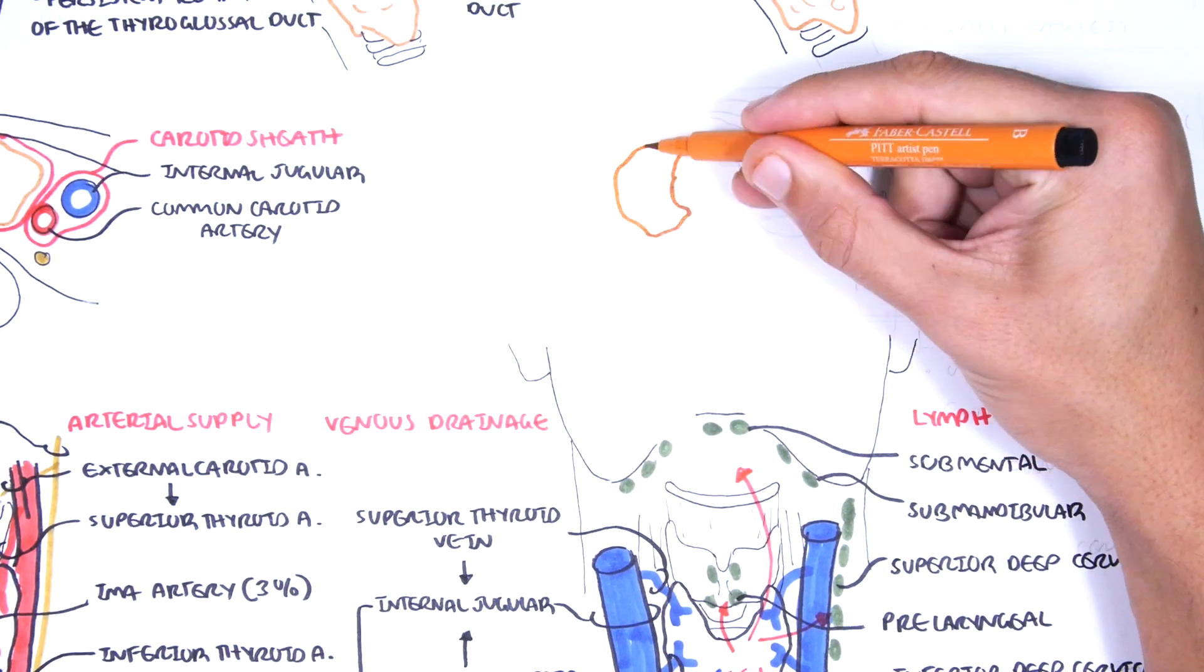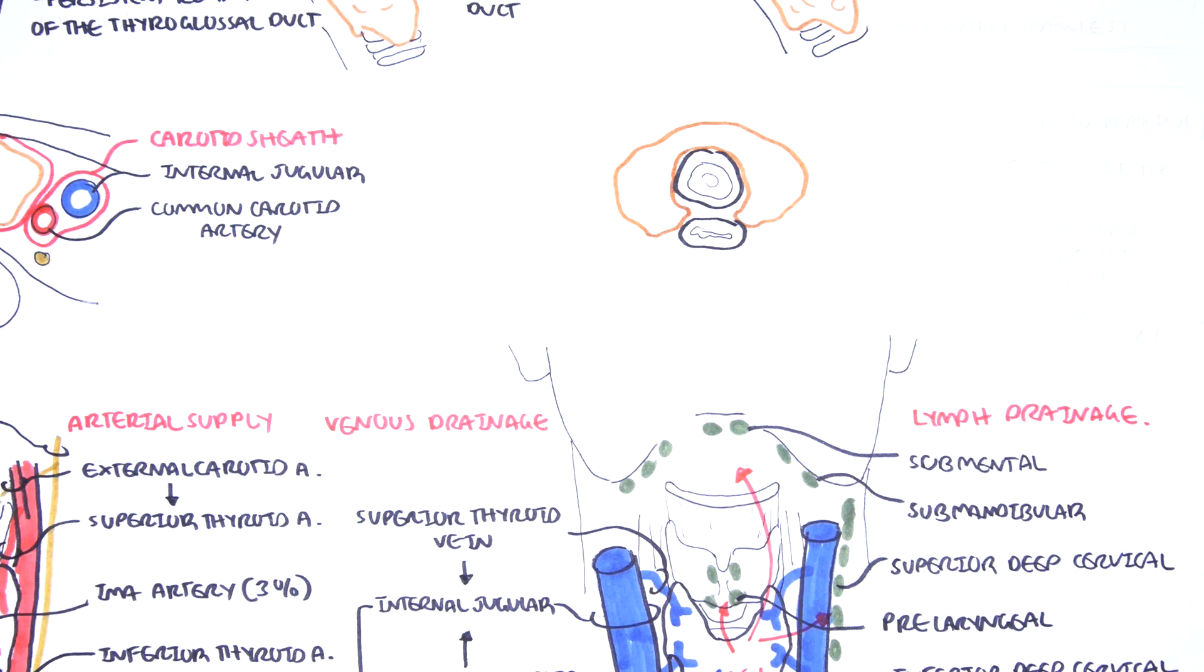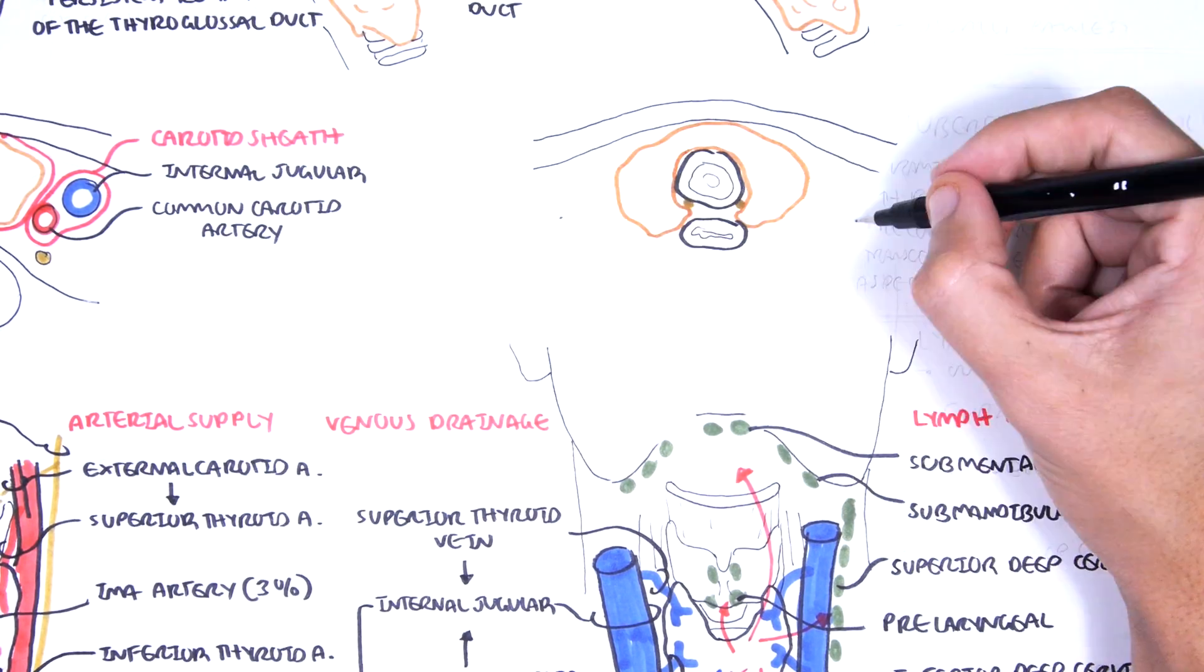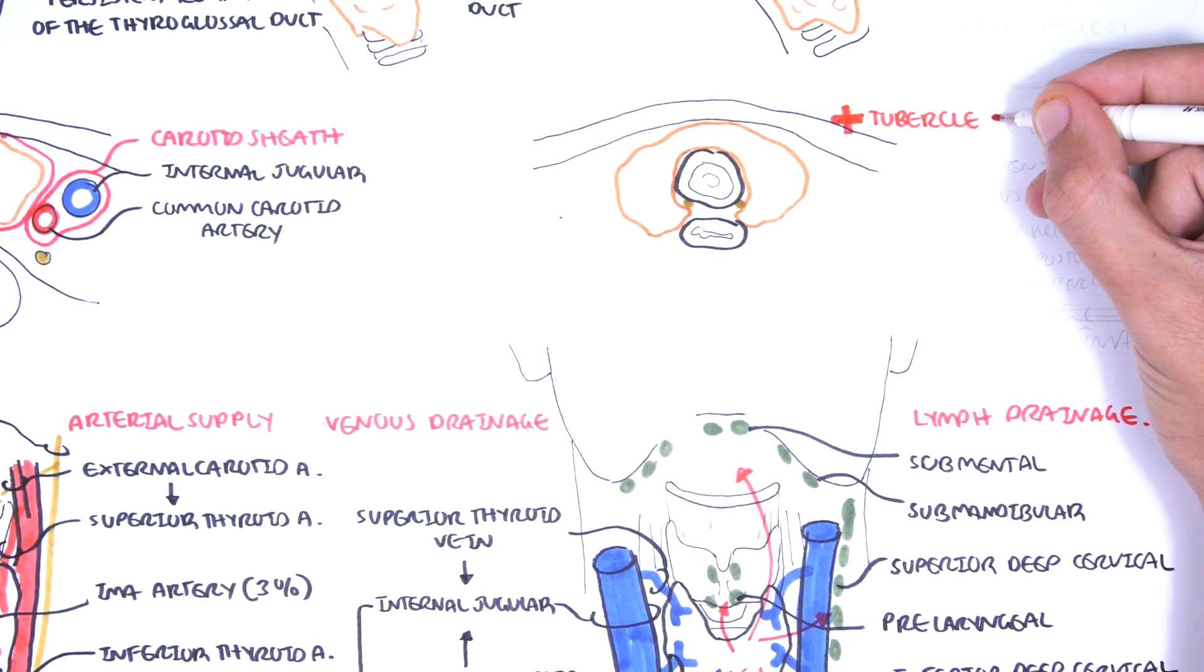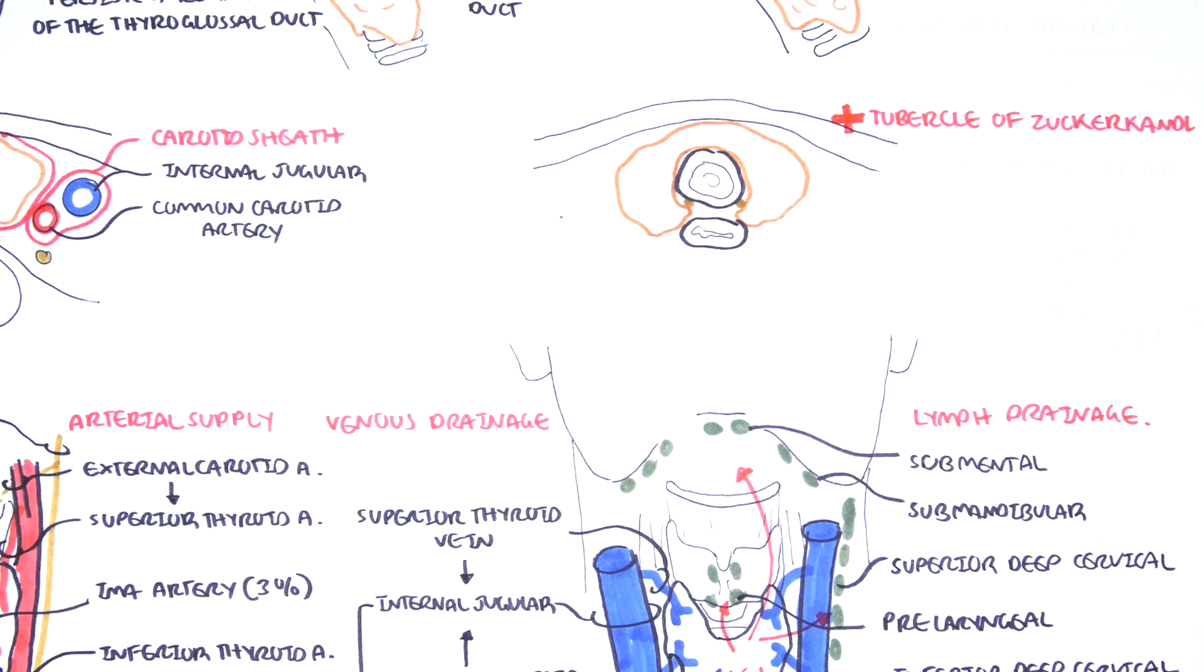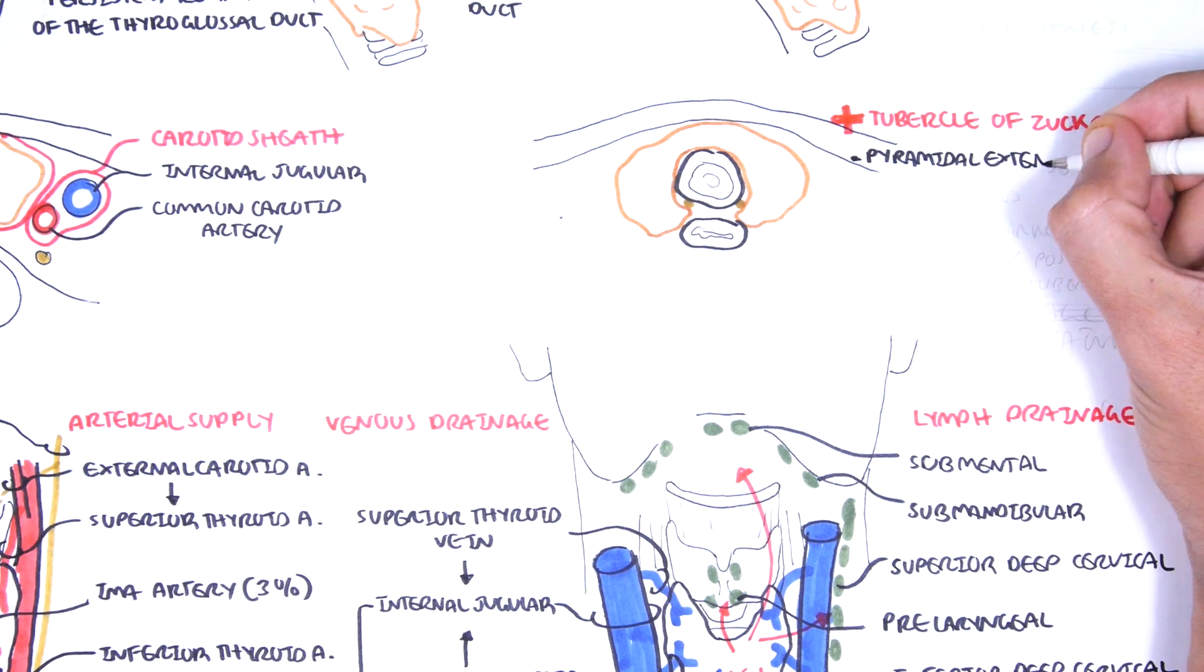Some clinical anatomy, let's talk about the tubercle of Zuckerkandl. Now the tubercle of Zuckerkandl is a pyramidal extension of the thyroid glands.